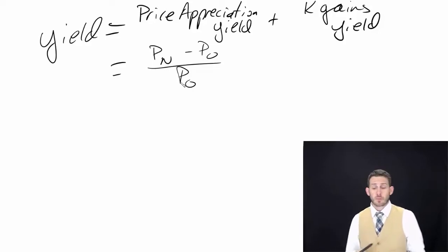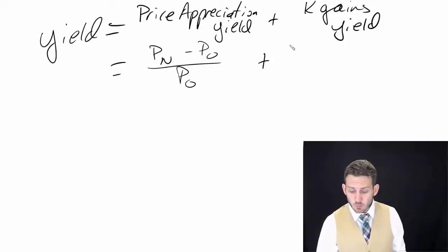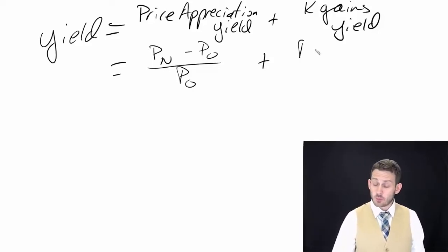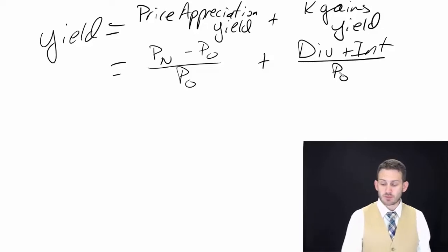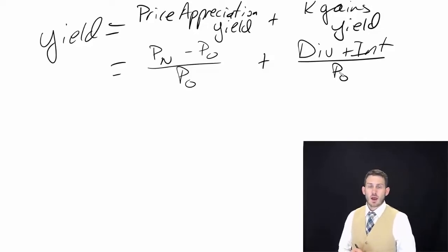For our capital gains yield, this is going to be our dividends plus our interest payments divided by the beginning price. One thing to keep in mind is we're not going to have dividends and interest on everything because not every asset is going to be paying us those.